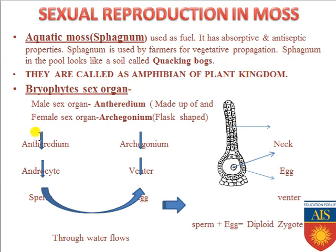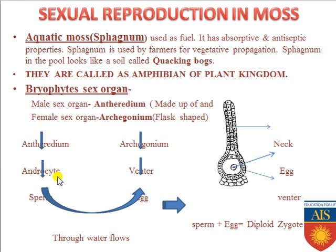Now let us discuss bryophyte sex organs. The male sex organ is called antheridium and the female sex organ is archegonium, commonly known as a flask-shaped structure. The antheridium produces male gametes called androcytes, from which sperms are produced. The archegonium contains the venter, within which the egg is present. When the sperm and egg fertilize, they form a diploid zygote.